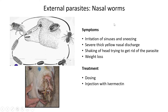Symptoms of nasal worm infestation include irritation of the nose and sinuses, and the animal will sneeze trying to expel the worm. There will be severe thick yellow nasal discharge, as shown in the picture. The animal also shakes its head to dislodge the parasite, and weight loss occurs because the animal feels uncomfortable and reduces its eating. Treatment is to dose the animal against the parasite and inject with ivermectin, which is effective against most parasitic problems.